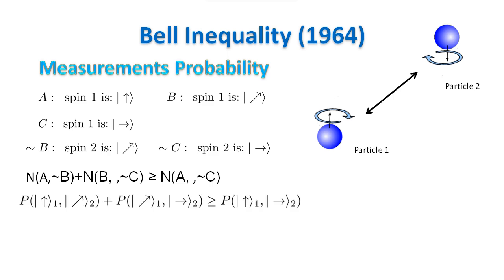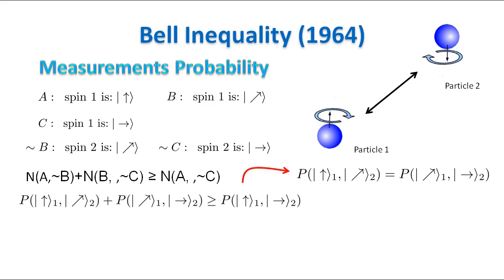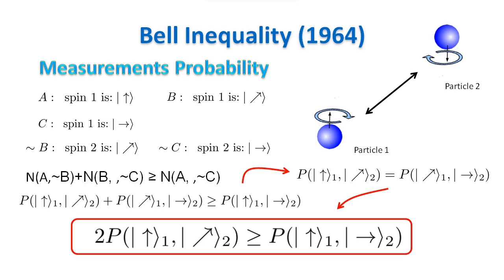Given the inequality from our little theorem, we have immediately an inequality in terms of probability of measurements on the particles. Now, we know that the probability to have particle 1 up along z and particle 2 up along the 45-degree axis is the same as the probability to have particle 1 up along the 45-degree axis and particle 2 up along x. This is because the singlet state is invariant under rotations. This gives eventually the famous Bell inequality.